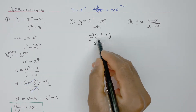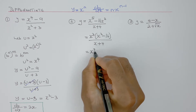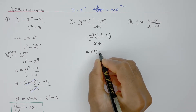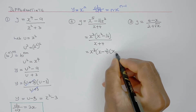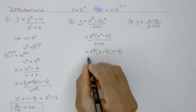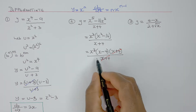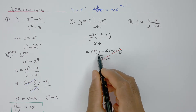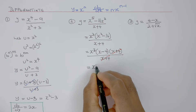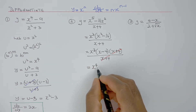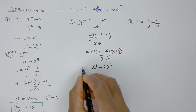Now I can see the difference of two squares here. So if I simplify this, it will be x cubed times (x minus 4)(x plus 4), divided by (x plus 4). x plus 4 cancels with x plus 4. So I only have x cubed times (x minus 4). And if I expand that I get x to the power 4 minus 4x cubed. So that's y.